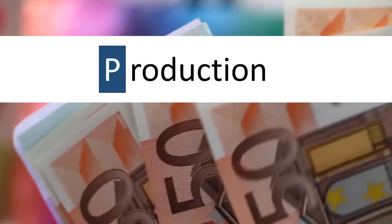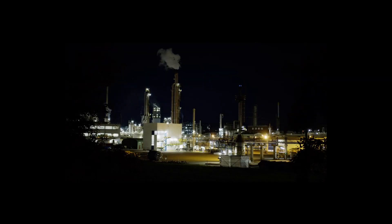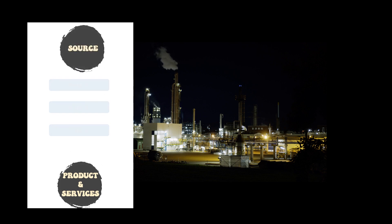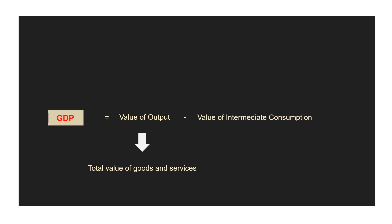In the production approach, or value added method, we look at how much value is added to goods and services at each step of making them. The approach focuses on the production process and how value is created at each stage by each firm or industry. The formula is: GDP = Value of Output, which represents the total value of goods and services, minus Value of Intermediate Consumption, which includes the cost of goods and services used up in the production process. So we are essentially trying to calculate the margin the country is making, which represents the value of all economic activities.